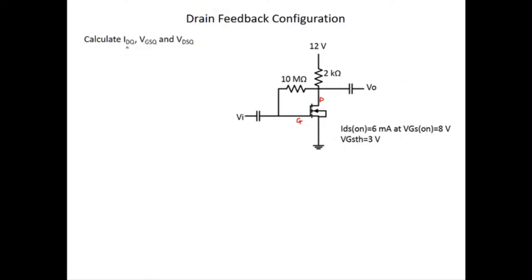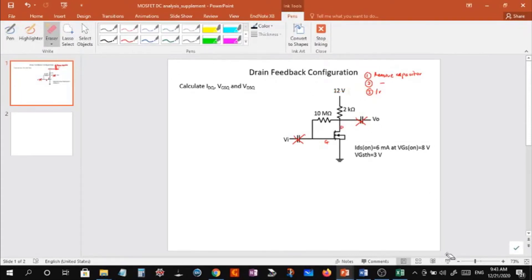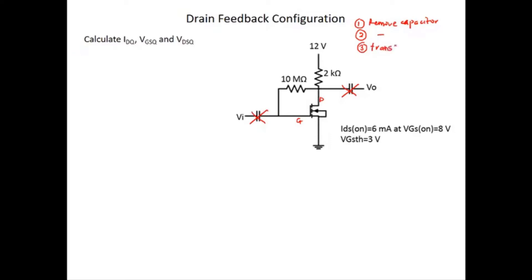What we want to do is calculate the drain current, VGS voltage, and VDSQ. For the DC analysis, the first step is to remove the capacitor. The second step: for a voltage divider you would use Thevenin's theorem, but this is not a voltage divider configuration, so no transformation is needed. The third step is to write down the transfer characteristic equation.